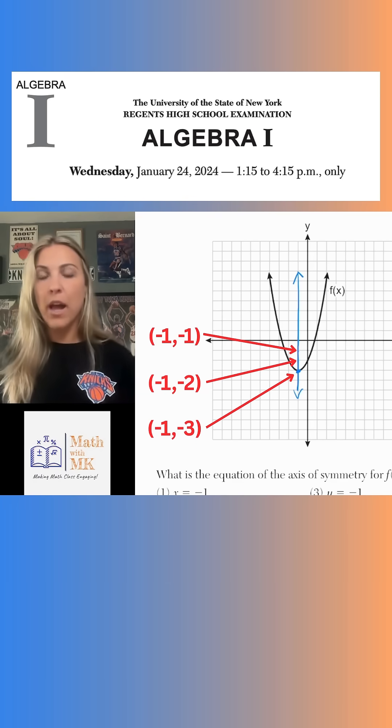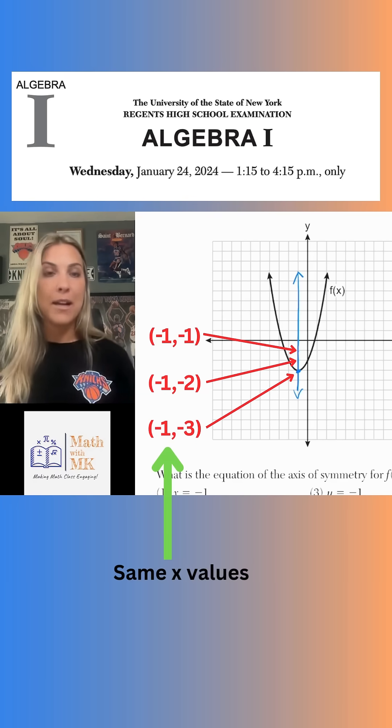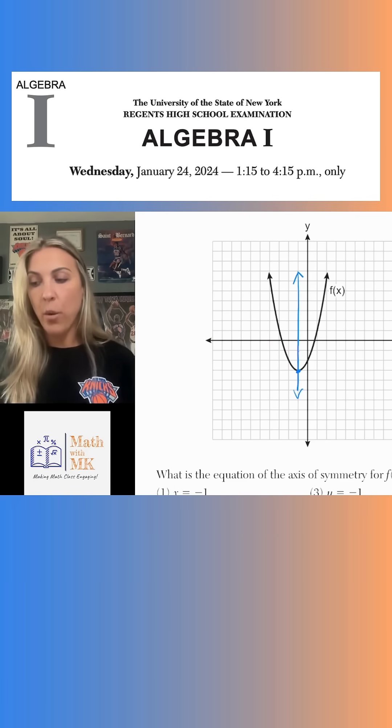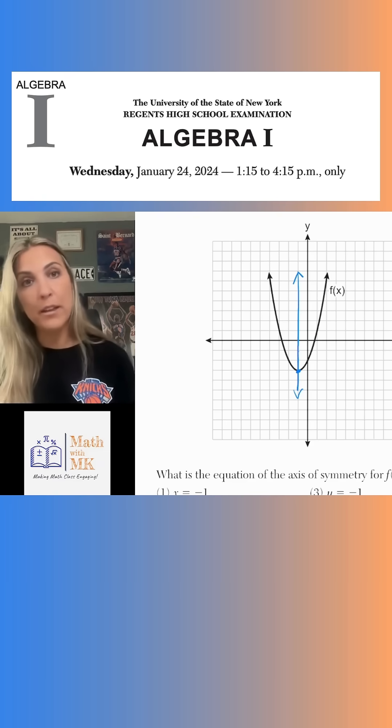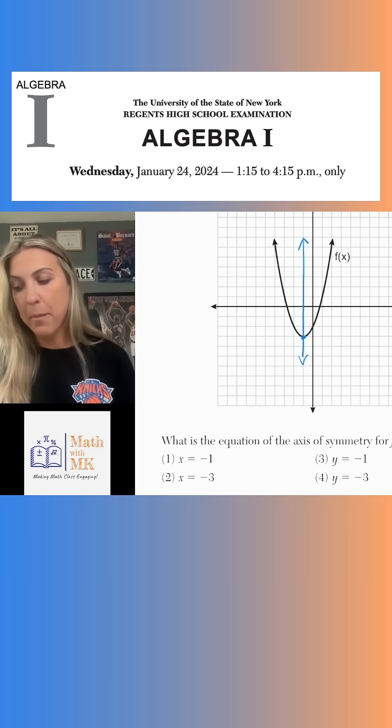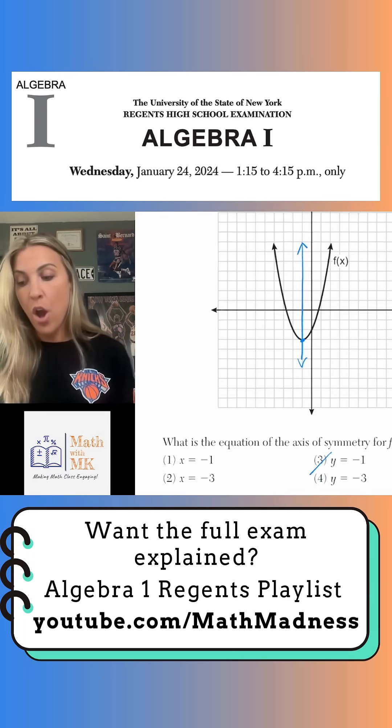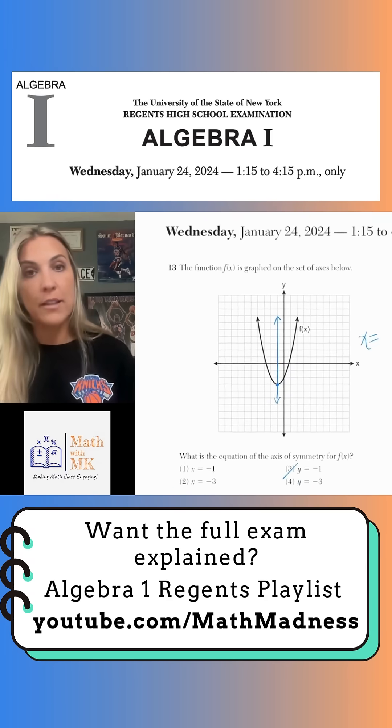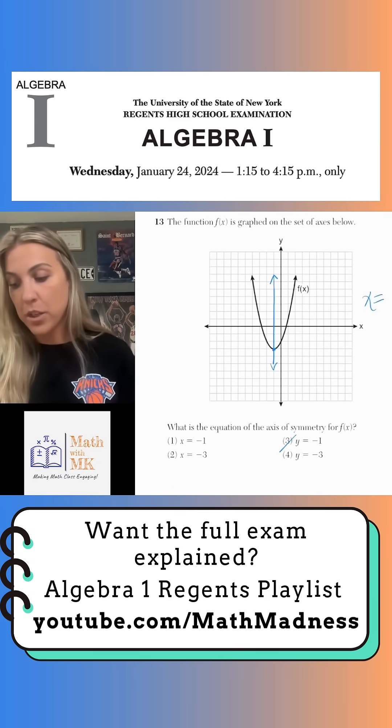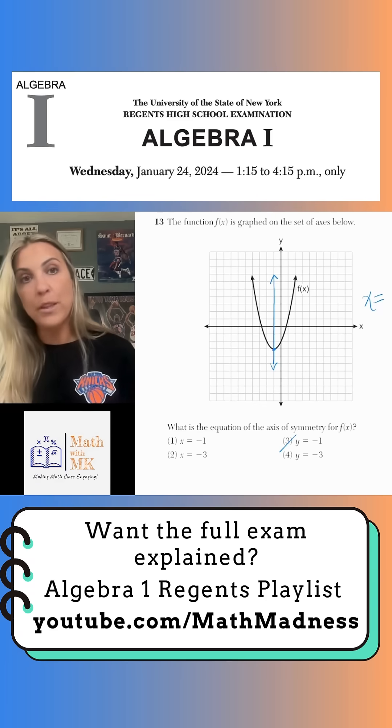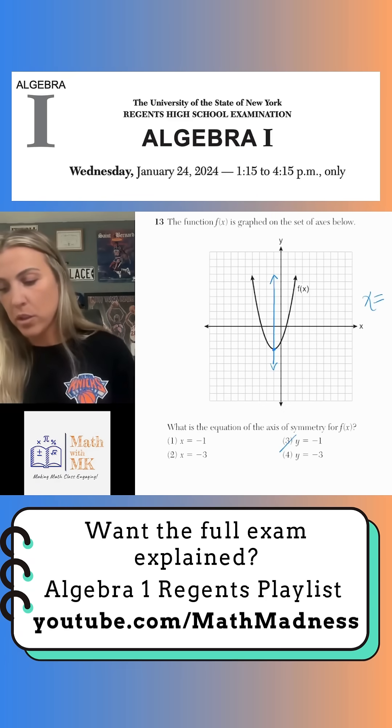So that's why the equation of a vertical line is always x equals some value. So that's going to help me eliminate two answer choices here that can't possibly be the answer. And that is three or four right off the bat are gone because those are horizontal lines and our axis of symmetry is a vertical line. So now I just have to make sure I have the right x value. My blue line goes through all points where x is negative one. And so number one is our answer choice.